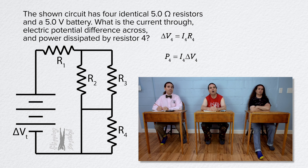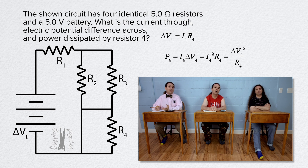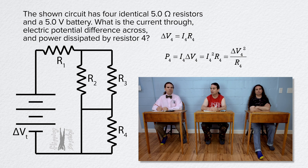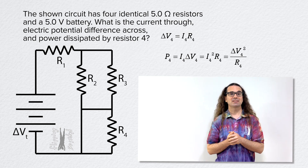Power also equals current squared times resistance, and electric potential difference squared over resistance. So again, if we know either the current through resistor 4 or the electric potential difference across resistor 4, we can determine the power dissipated by resistor 4. But again, we do not know either of those. I agree with all of that.